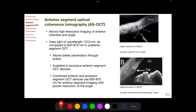Anterior segment optical coherence tomography (AS-OCT) allows high-resolution imaging of the anterior chamber and angle. OCT devices used exclusively for anterior segment imaging use light of wavelength 1310 nanometers, compared to 820–870 nanometer light used in posterior segment OCT devices. This 1310 nanometer light allows better penetration through the sclera and better imaging of the anterior chamber angle.